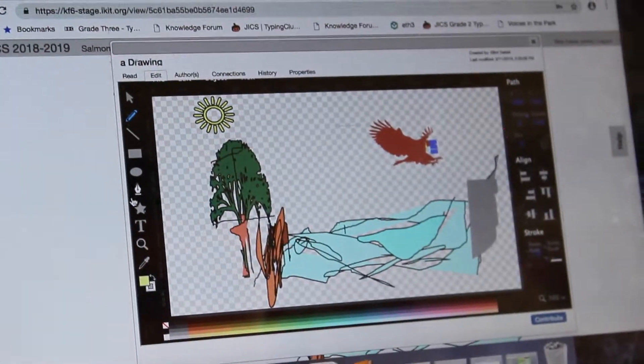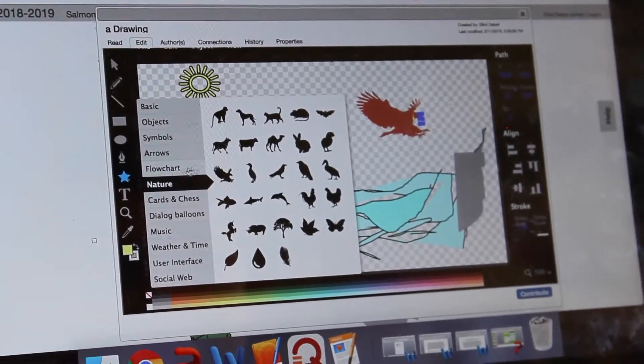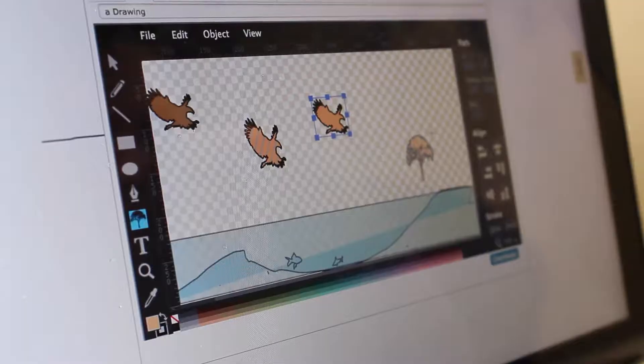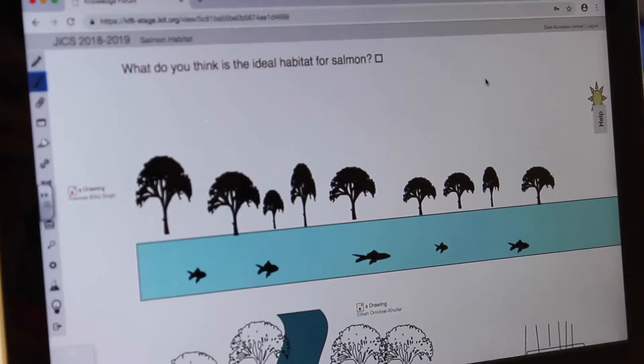We had a really interesting project where we were trying to make their thinking visible a little bit. We did it in two ways. One, we were on Knowledge Forum and we asked them to draw the ideal habitat of a salmon. So what would that look like based on all of the learning we've done so far? What would be ideal for salmon?